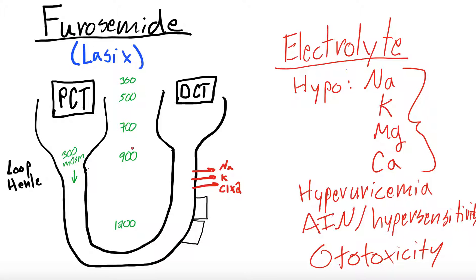As I said, furosemide or Lasix is a loop diuretic. This drawing here is just part of a nephron. So, the part we are talking about, we have the proximal convoluted tubule. It goes into the loop of Henle, and you have the descending portion of the loop of Henle and the ascending portion into the proximal portion of the distal convoluted tubule. The other things I have here in green are osms.